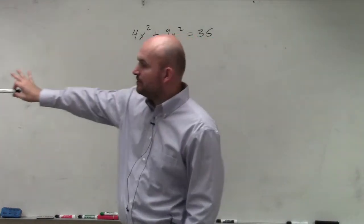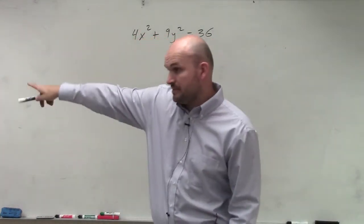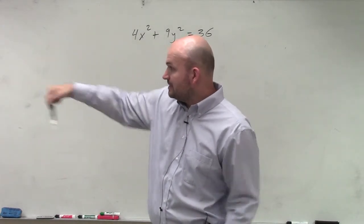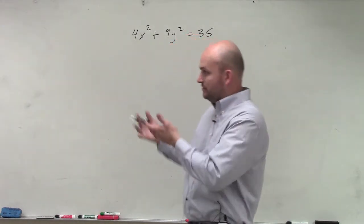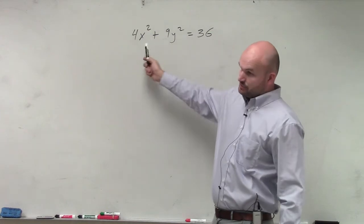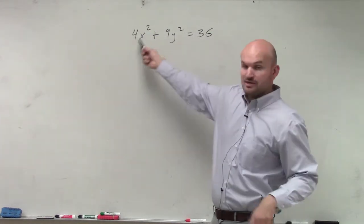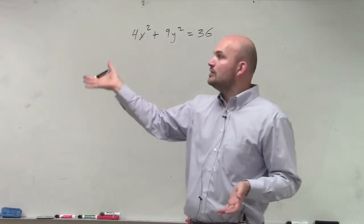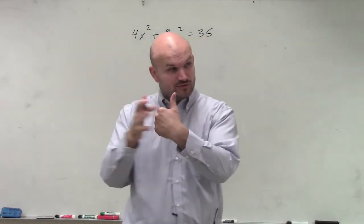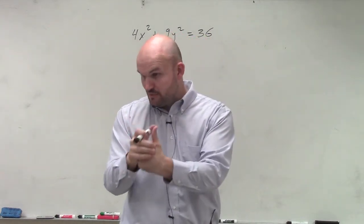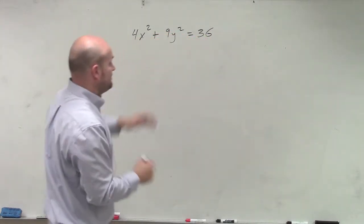So if you guys remember last class period, we talked about looking at these formulas for an ellipse. When we're not dealing with a circle, we're not looking at r squared because our coefficients are not the same. For our two equations for an ellipse, we have to have it equal to 1. That's the first thing we want to make sure is we have our equation of our ellipse equal to 1.